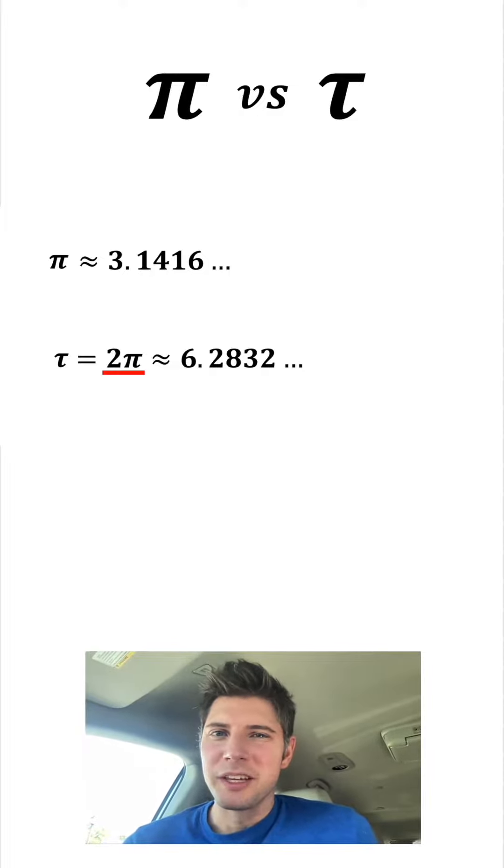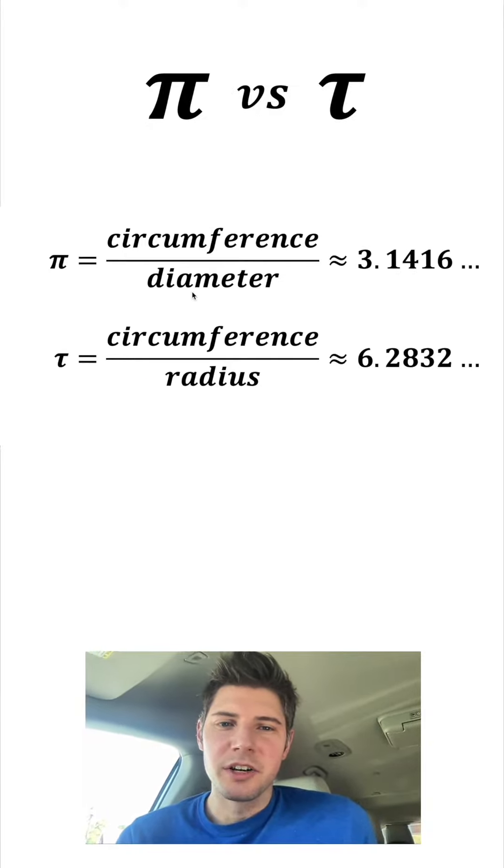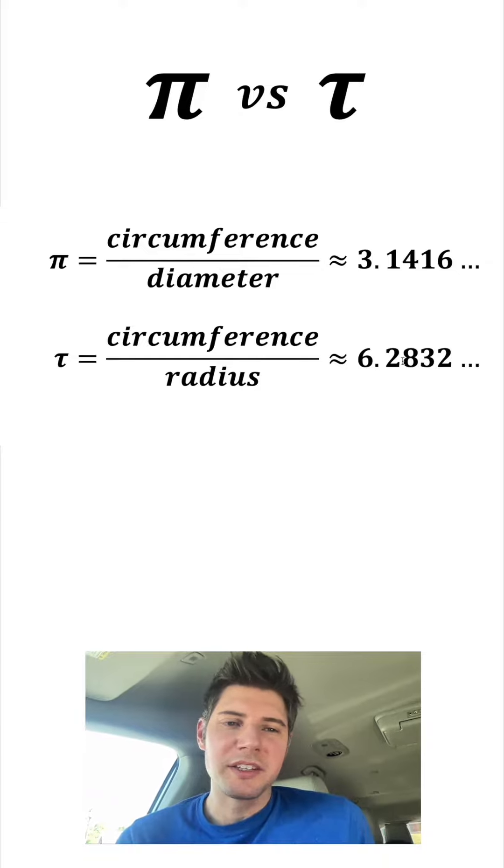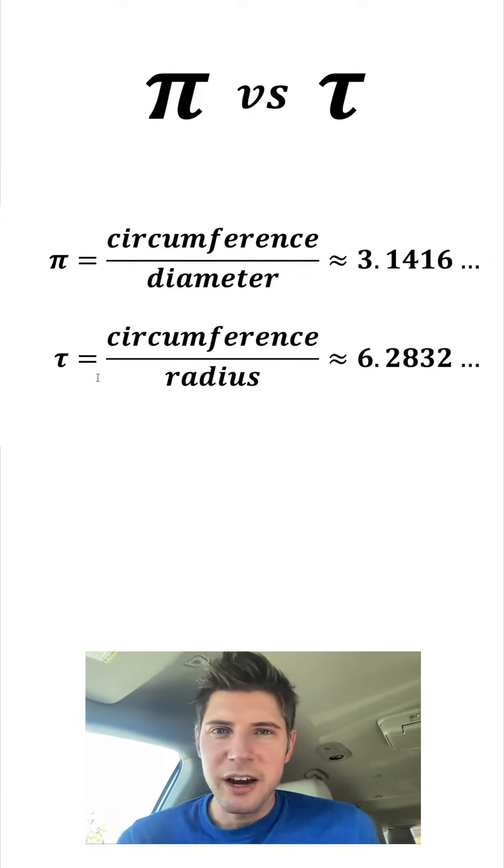But why would we define something as two times pi? It seems kind of arbitrary, but it's not arbitrary. Pi is the circumference over the diameter and tau is the circumference over the radius. Since the radius is half the size of the diameter, that's what makes tau twice as big because you're dividing by something that's half the size.